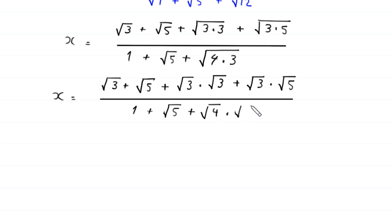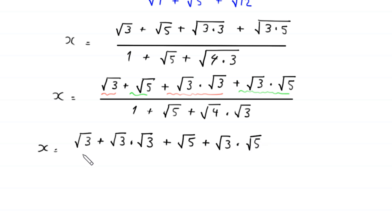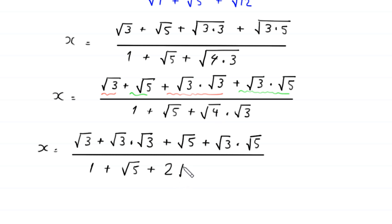In the numerator we combine terms: √3 with √3·√3, and √5 with √3·√5. This gives x = (√3 + √3·√3 + √5 + √3·√5) divided by (1 + √5 + √4·√3), where √4 becomes 2, so the denominator is 1 + √5 + 2√3.